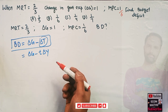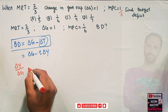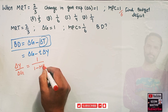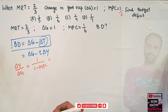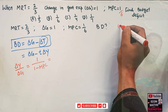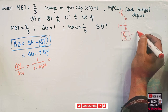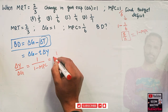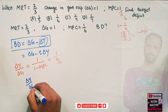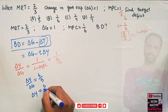We need to find the change in income with respect to change in government expenditure — that means we need the government expenditure multiplier, which is 1/(1 − MPC). So 1 − MPC = 1 − 1/6 = 5/6. Therefore ΔY/ΔG = 1/(5/6) = 6/5, meaning ΔY = (6/5)·ΔG.